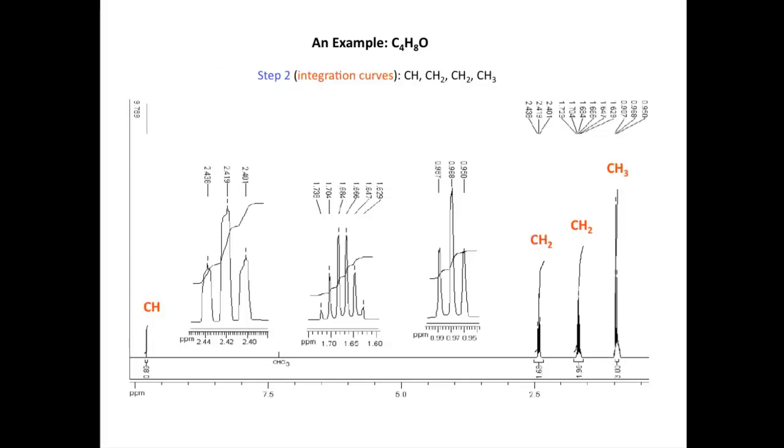In step two, we're going to be looking at the integration curves for each of those four signals. And when we do that, we get a ratio of hydrogens of one to two to two to three. So this indicates a CH, a CH2, another CH2, and a CH3 unit within the molecule.